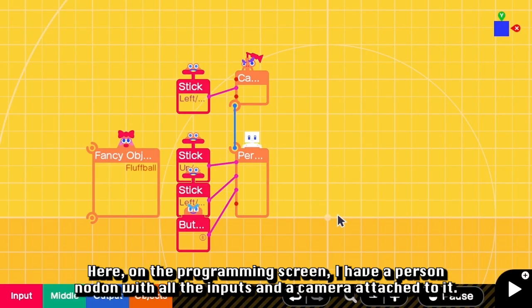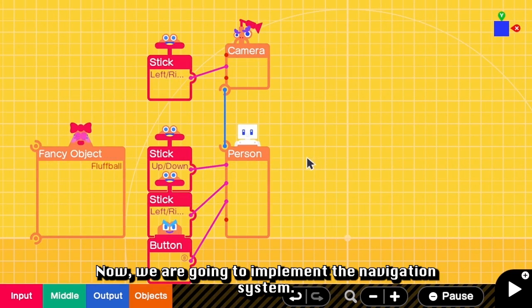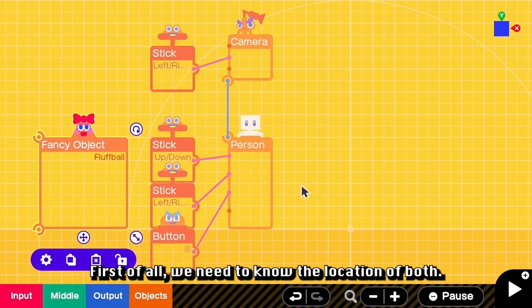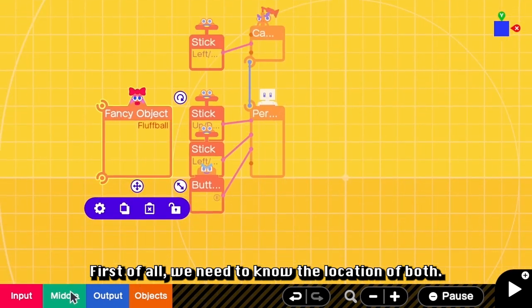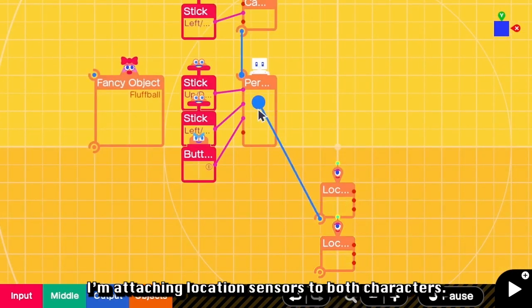Here on the programming screen, I have a person Nodon with all the inputs and a camera attached to it. I also have a fluff ball here. Now we are going to implement the navigation system. First of all, we need to know the location of both. So I'm going to attach location sensors to both characters.